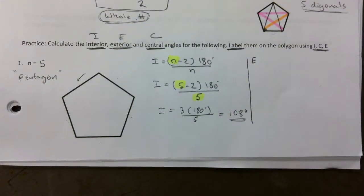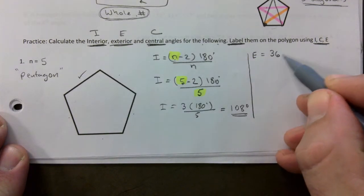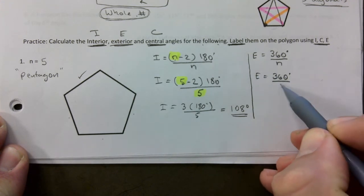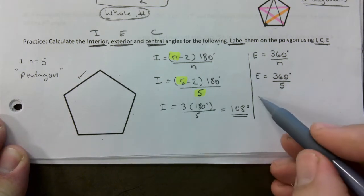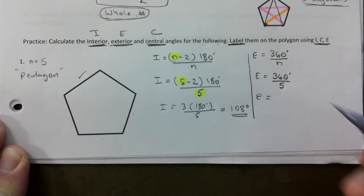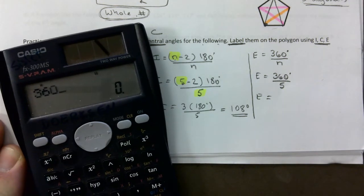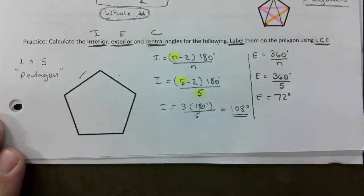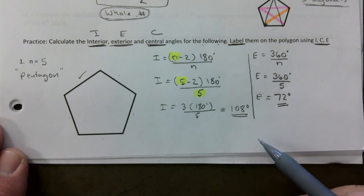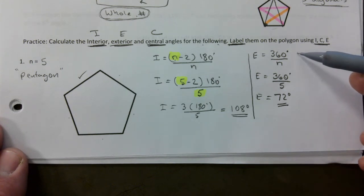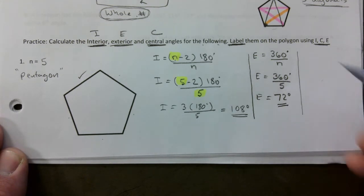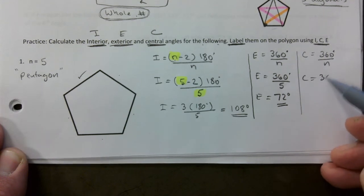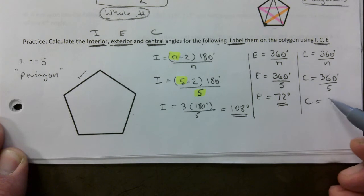Next, the exterior angle: it's 360 divided by n. So 360 divided by 5 gives 72 degrees. The central angle is also 360 divided by n — 360 divided by 5 — which is also 72 degrees.